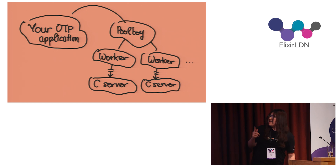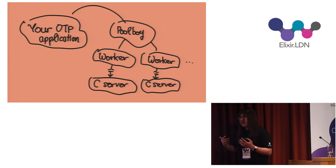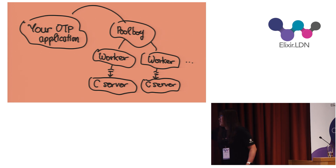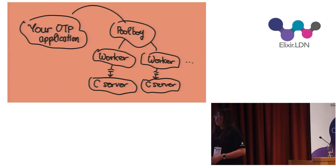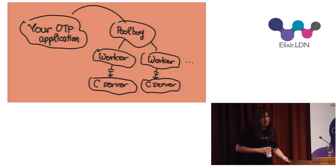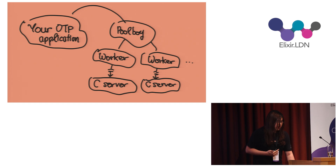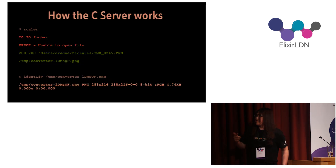If your C server dies — for example, because someone feeds it a bad image — the worker dies too. But the pool will generate a new one for you, so everything gets recreated. This isolates your solution from malicious input.